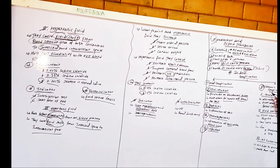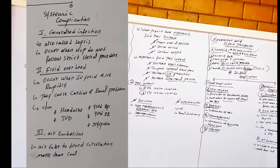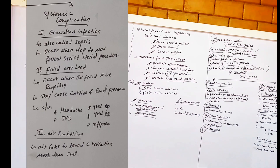What are the systemic complications of IV fluid? The first systemic complication is generalized infection, which we call sepsis. Sepsis means that an infection has spread from the local IV site to all other parts of the body. This occurs when healthcare professionals do not follow strict sterile procedures.